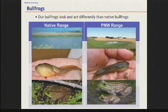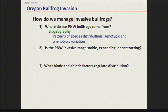I want to structure the rest of this by answering three different questions. The first: where do our Pacific Northwest bullfrogs come from — where were they sourced? Second: is the range here stable, expanding, or contracting? And third: what are the factors regulating these populations and their potential distribution? I used a biogeographic method — molecular genetics — to look at where they came from.